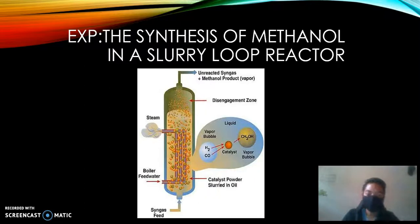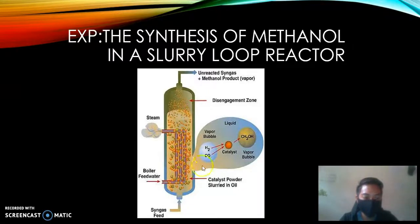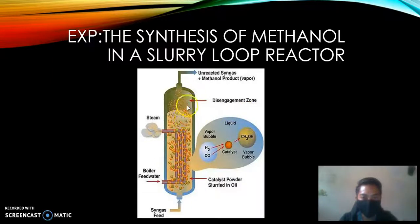This is an example of the use of a slurry loop reactor: the synthesis of methanol. Looking at this infographic, syngas feed will enter the bottom of the reactor into the heated mineral oil. The gas will react in the presence of a suspended catalyst and will produce methanol. This process will release some gases, which will go to the top of the reactor, and once the gas exits the reactor it will condense back to liquid.